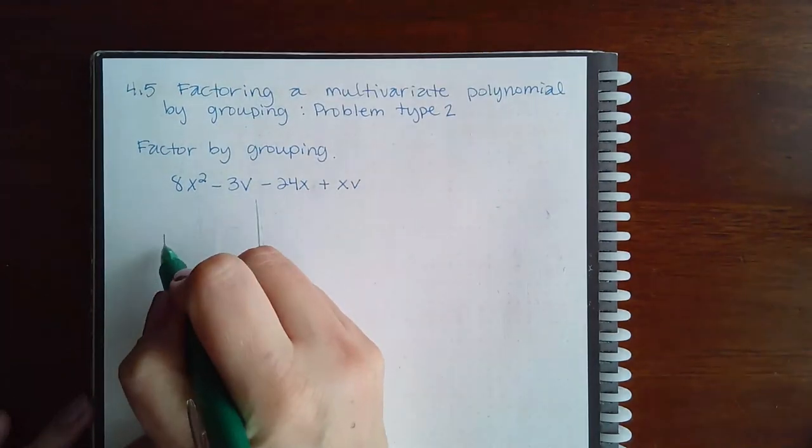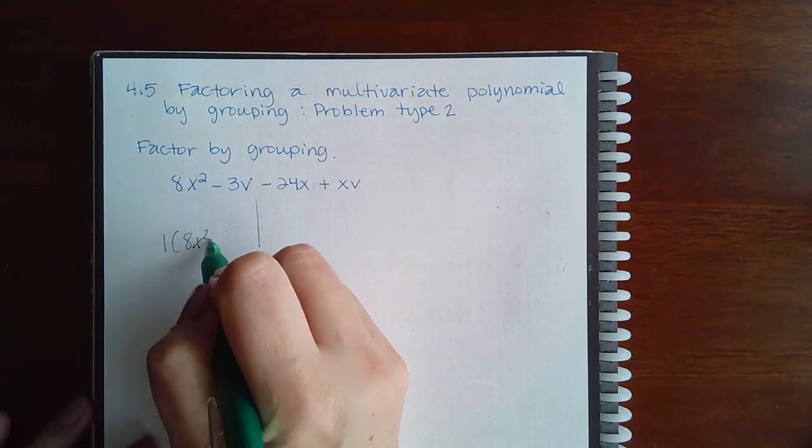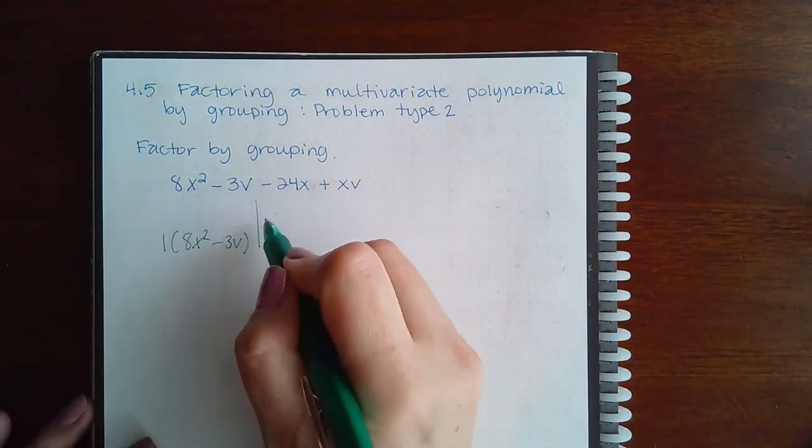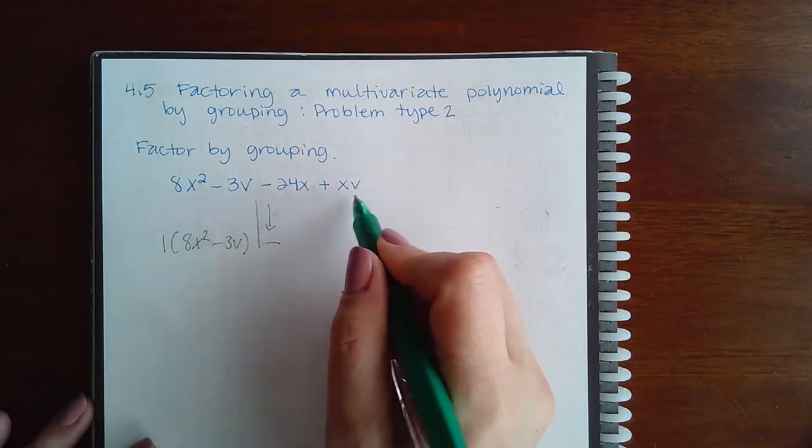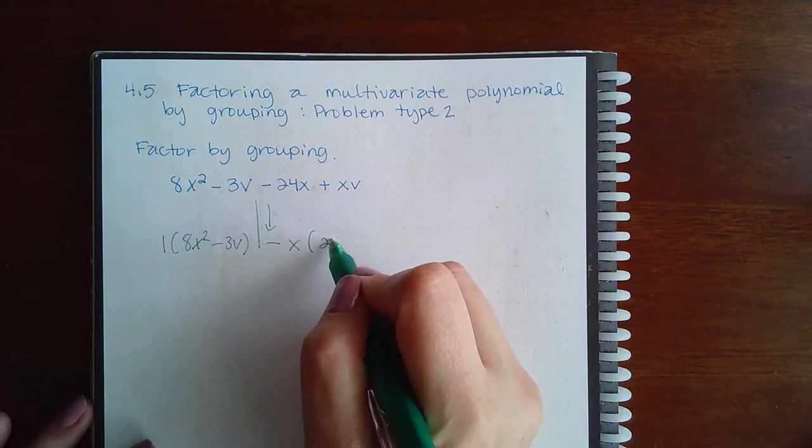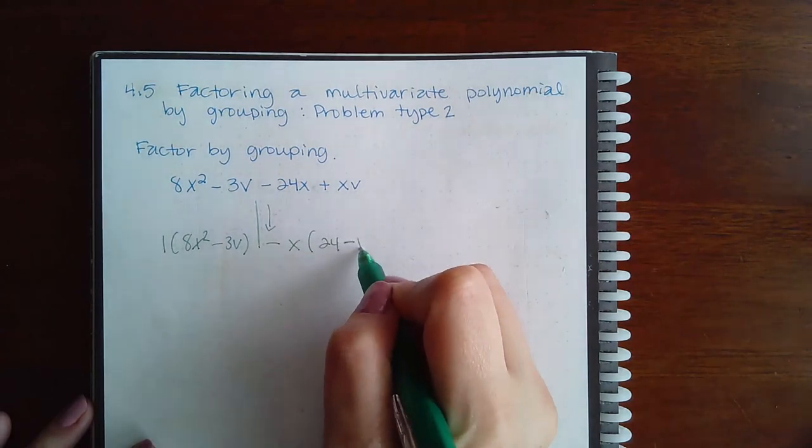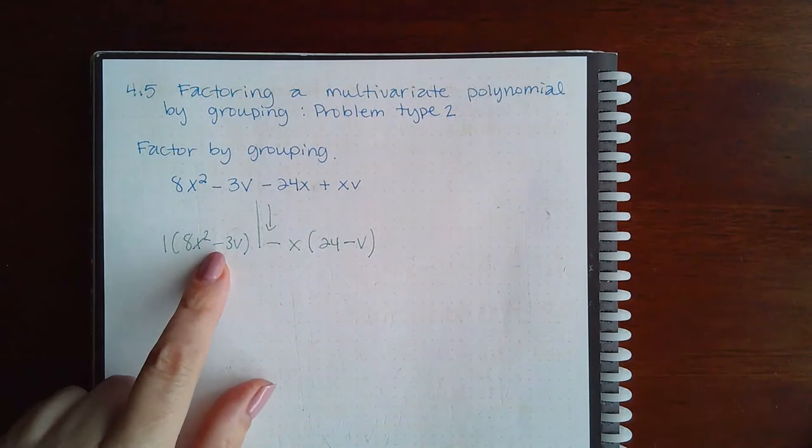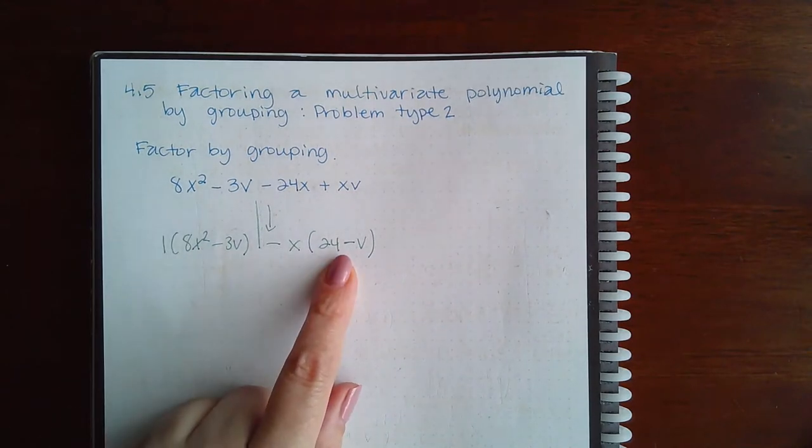I do not have anything in common on this side, so I'm left with the same two terms. Bring down my minus sign. I have an x in common here on this side, which will give me 24 and a negative v. But what is in this parentheses does not match what is in this parentheses...